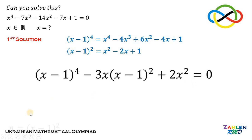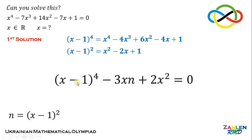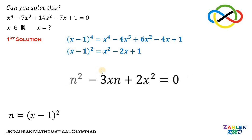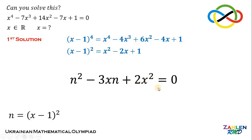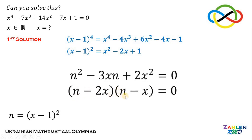To simplify, let n equal (x minus 1) squared. Then (x minus 1)^2 is just n, and (x minus 1)^4 is n squared. We now have n squared minus 3xn plus 2x squared, which factors as (n minus 2x)(n minus x).